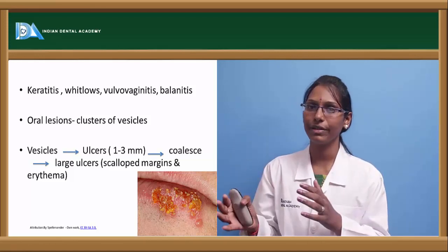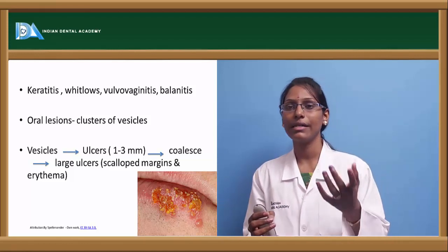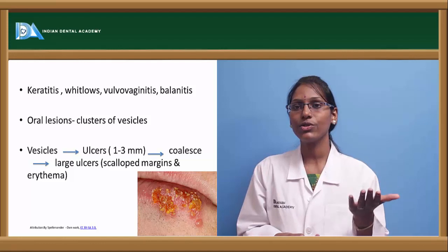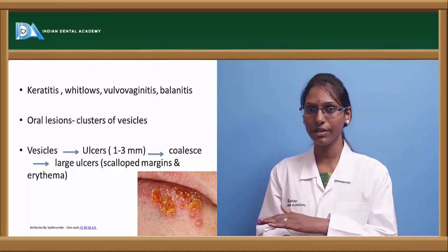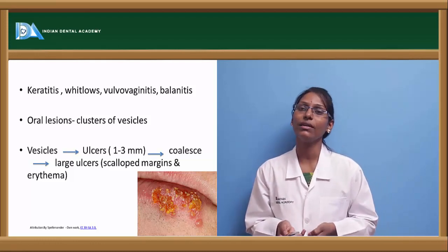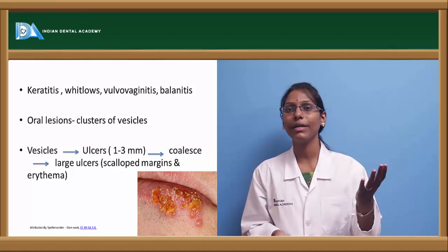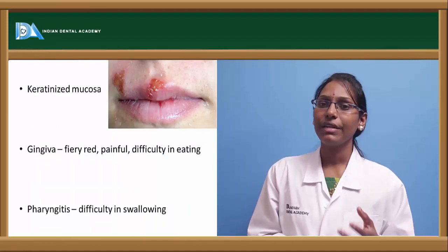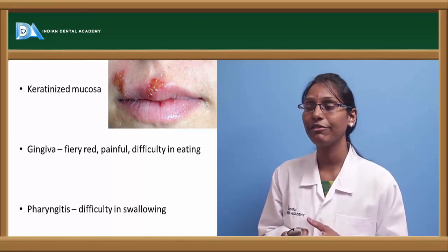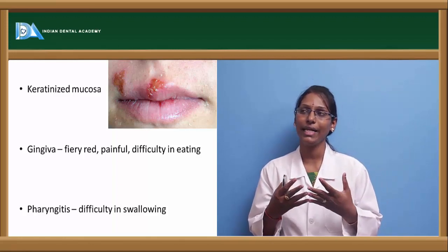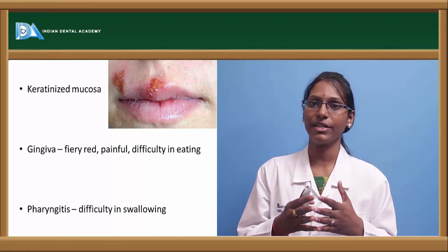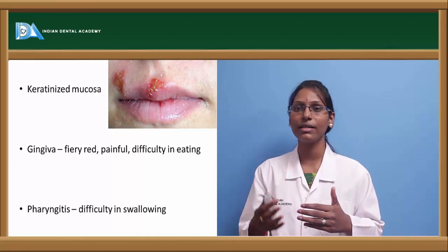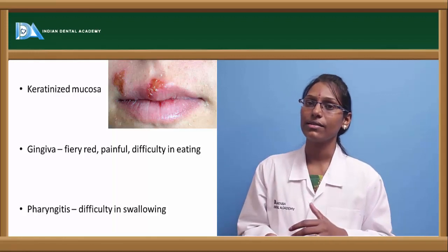These ulcers will have an irregular border — that is the pathognomonic sign of HSV oral lesions — and are usually seen on the vermilion border. Later phases show crusting and healing after the infection. At the gingival region these lesions are very red, painful, and cause difficulty in eating. The patient will have a sore mouth, difficulty eating spicy foods, restrict to bland food, and usually these conditions are associated with a prodromal fever. The patient will also have difficulty in swallowing in case of HSV pharyngitis.